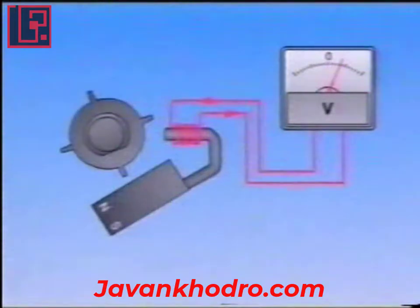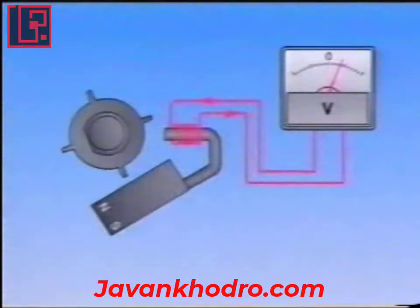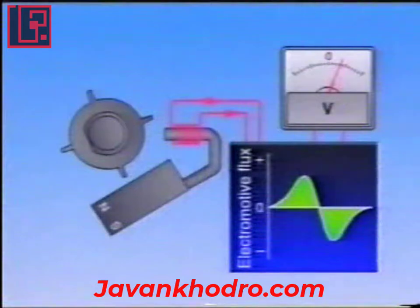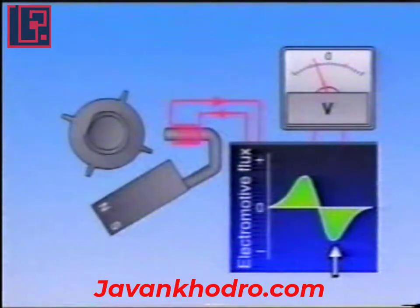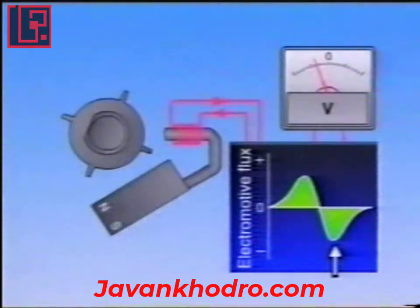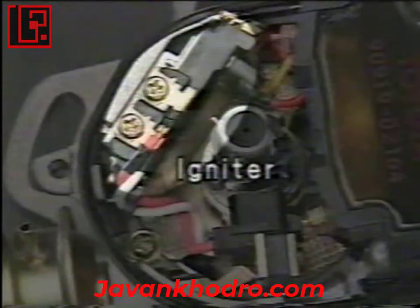The level of EMF generated depends on the relative positions of the rotor and pickup coil. When a rotor tooth approaches the pickup coil, the EMF increases. And when the rotor tooth and the pickup coil face each other, it becomes zero. When they move apart, a counter-EMF is generated. These changes in the EMF cause the igniter to switch the primary current on and off.